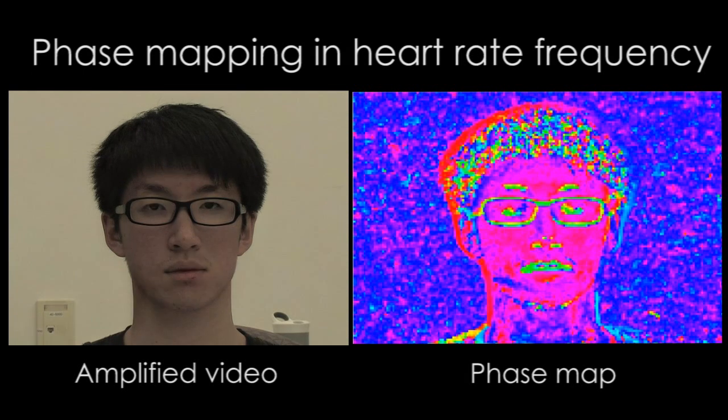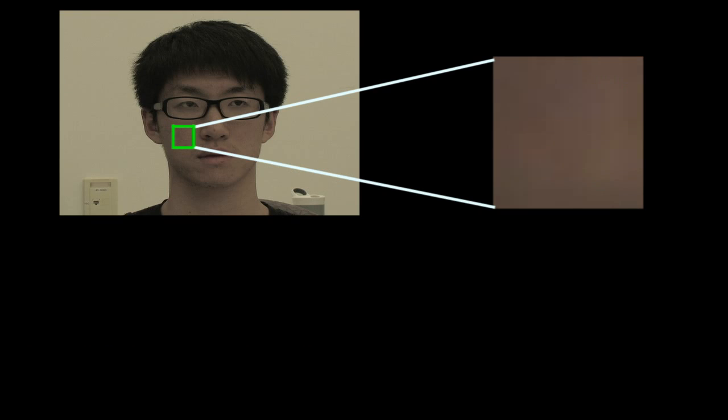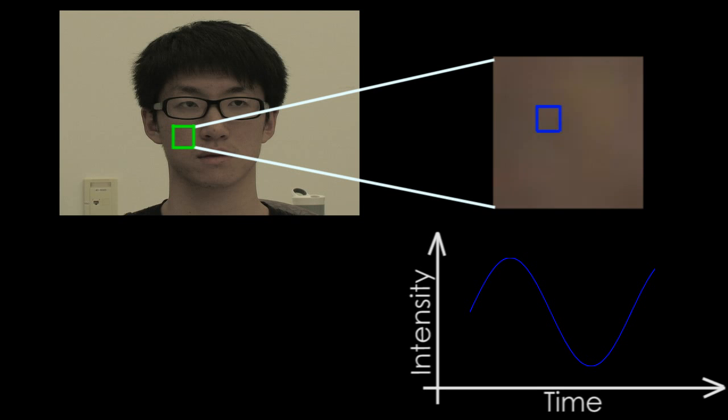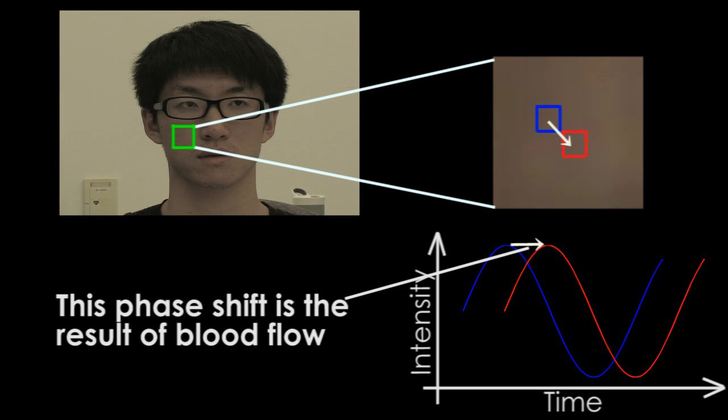The phase values in noisy regions like here or in the background vary a lot. In this zoomed-in region of the skin, it can be seen that not all pixels vary in exactly the same way. Some pixels change their intensity earlier than others. This means the periodic intensity signal of each pixel is shifted in time compared to the others. This shift corresponds to the blood flow information we are interested in.